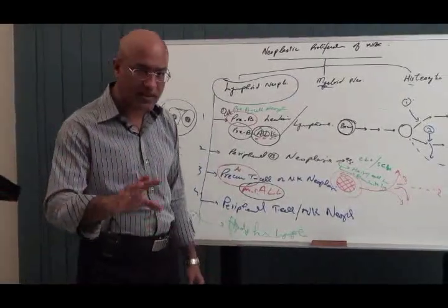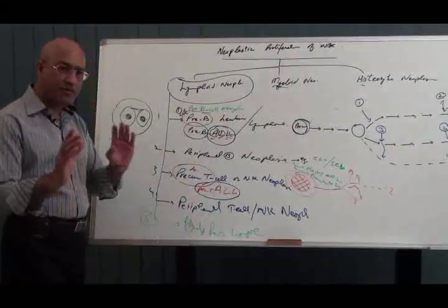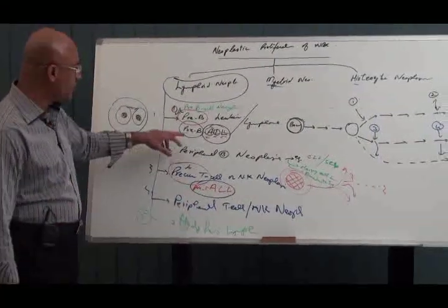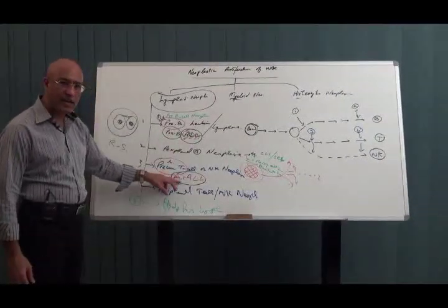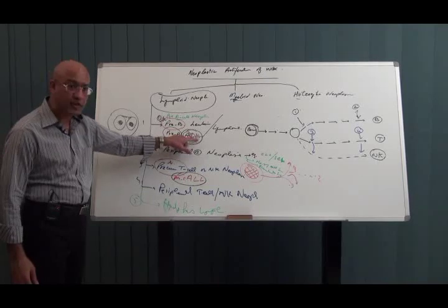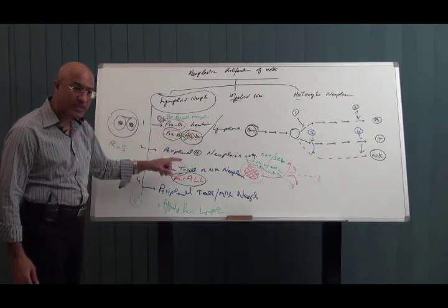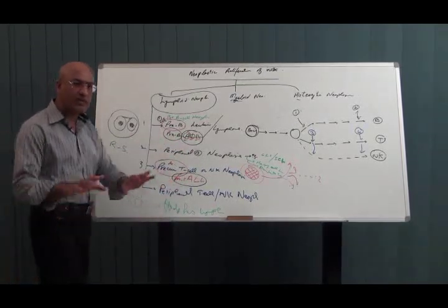Right now after discussing all this, after the break I will go into detail of pre-B ALL and pre-T ALL, or simply I will say I will go into detail of acute lymphoblastic leukemia in which there are B category and T category. Let's have a break now.